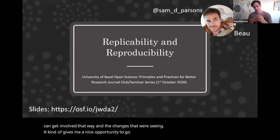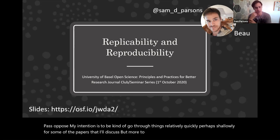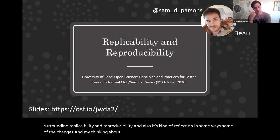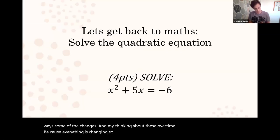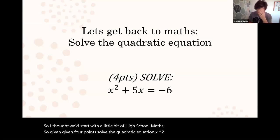My intention is to go through things relatively quickly and perhaps shallowly for some of the papers that I'll discuss, but more to give an overall impression of issues surrounding replicability and reproducibility and to reflect on some of the changes in my thinking about these over time. I thought we'd start with a little bit of high school maths. Given four points, solve the quadratic equation x squared plus five x equals minus six.